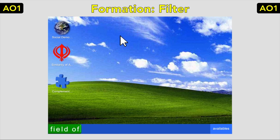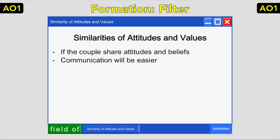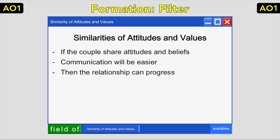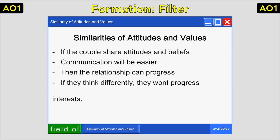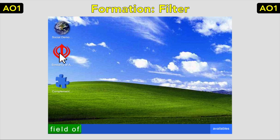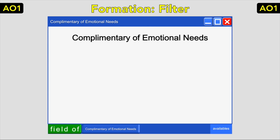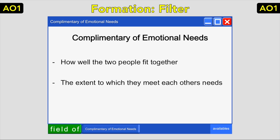Once two people start going out, the next filter engages: similarity of attitude and values. If the couple shares ideas and beliefs, communication will be easier and the relationship can progress. But if they think differently and share few views on the world, it's likely the relationship will not progress. At this stage, people with different attitudes, values and interests are filtered out. Finally, once a couple has established a long-term relationship, the third filter comes in: being complementary in emotional needs — how well the two people fit together and how much they meet each other's needs.